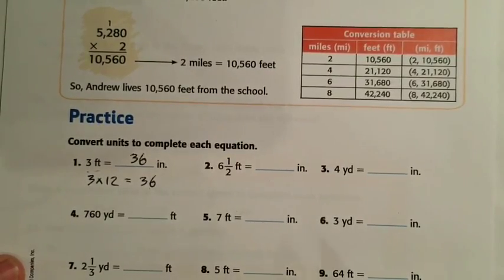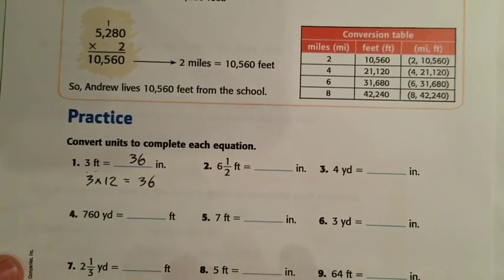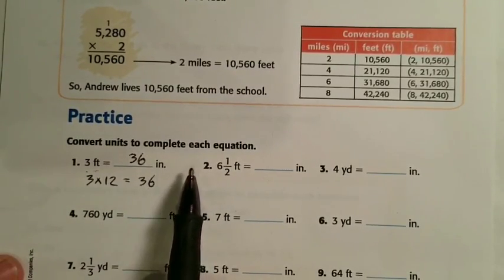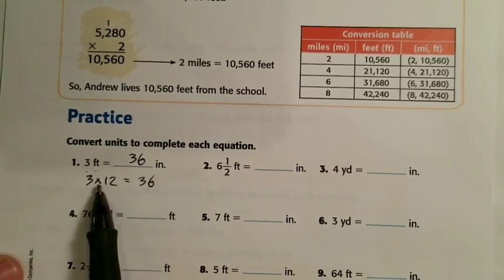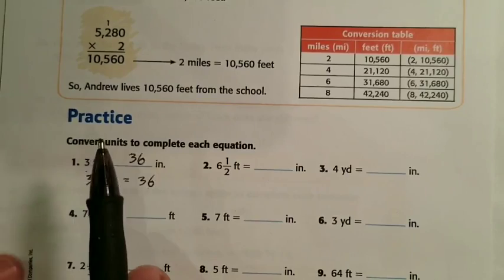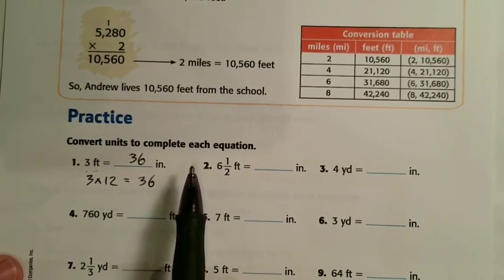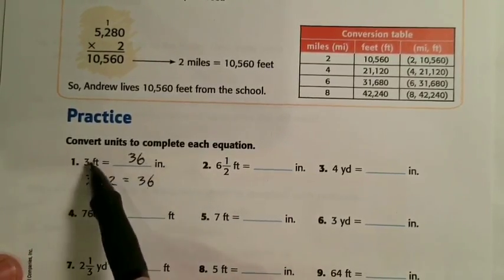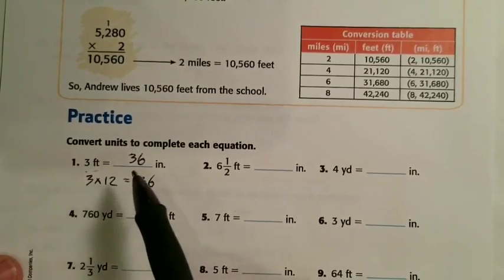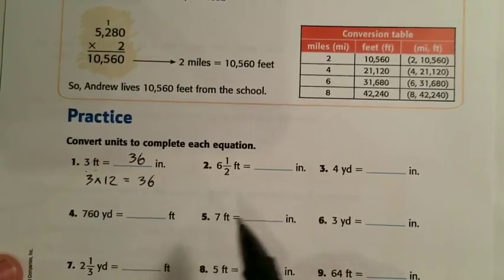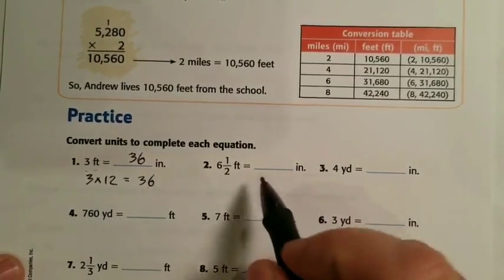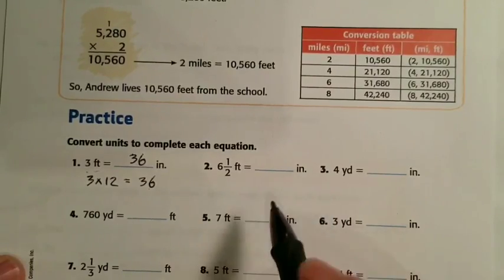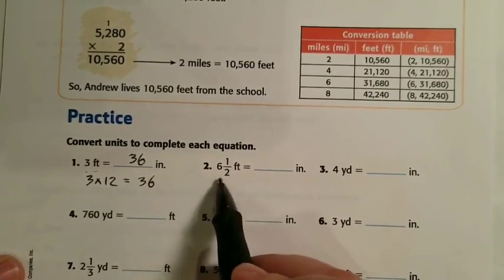You just have to make sure you're using multiplication or division correctly. Feet is a larger unit; inches is a smaller unit. When you go from a larger unit to a smaller unit, you multiply. When you go from a smaller unit to a larger unit, you divide. So feet to inches — bigger to smaller — we multiply by 12.